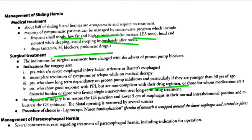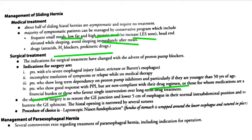The objective of surgery is to restore the GE junction to its normal intra-abdominal position. The procedure of choice is laparoscopic Nissen fundoplication. In this procedure, a laparoscope is used to hold the fundus of the stomach, wrap it around the lower esophagus, and suture it in place. This is a potential exam question: the procedure of choice for sliding hernia is laparoscopic Nissen fundoplication.